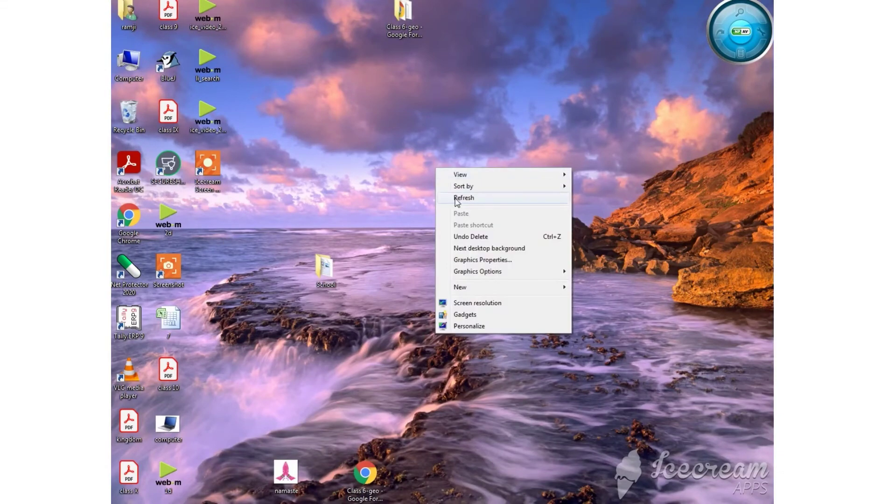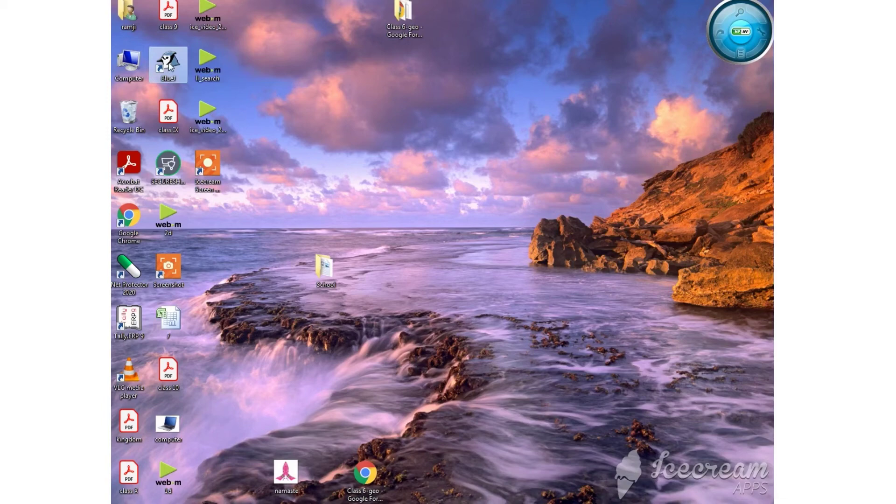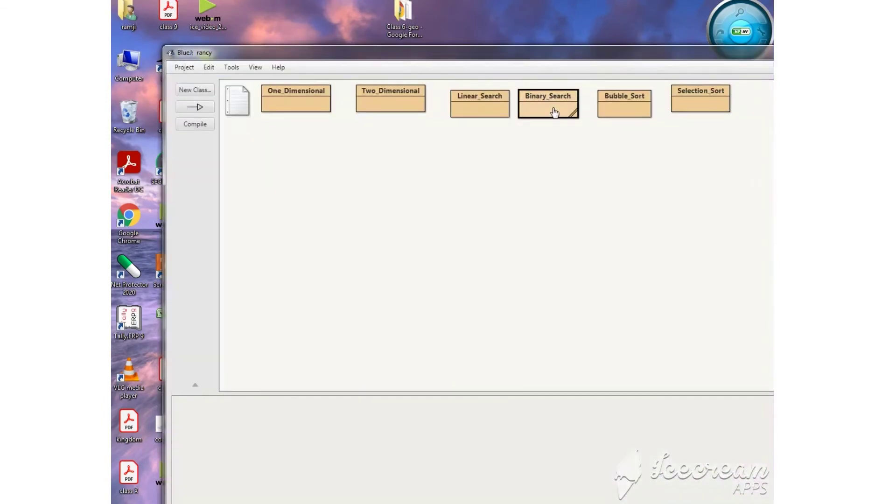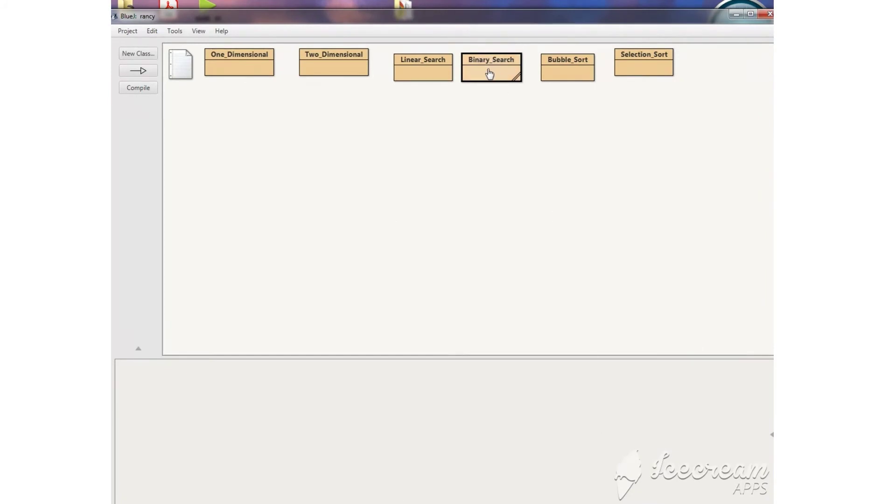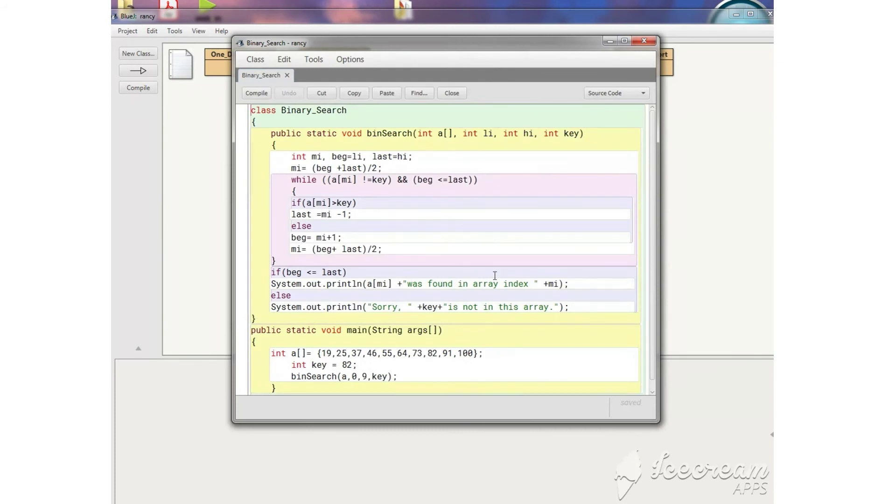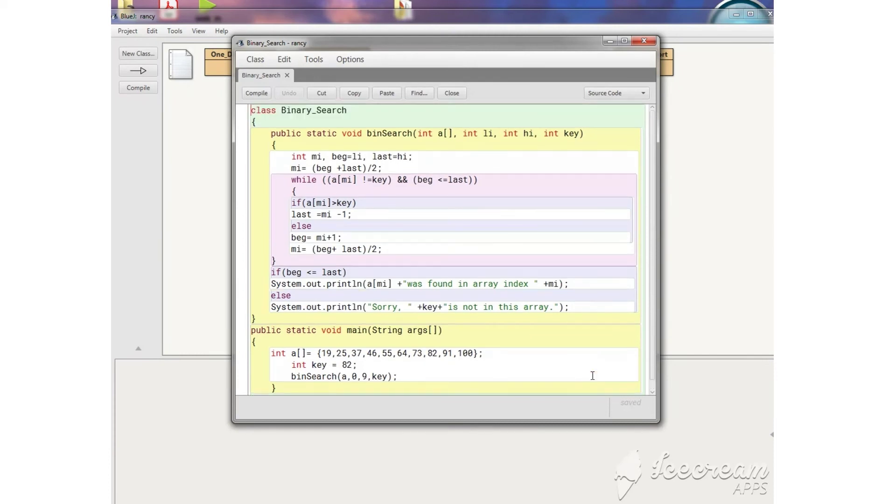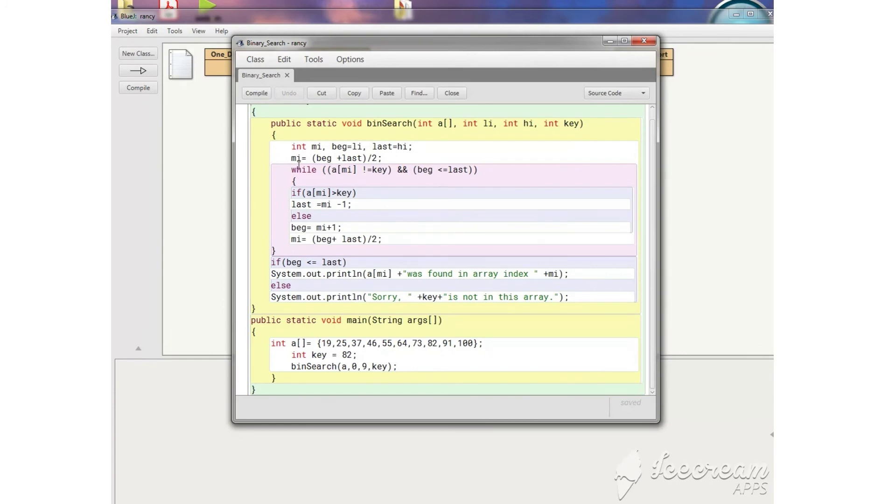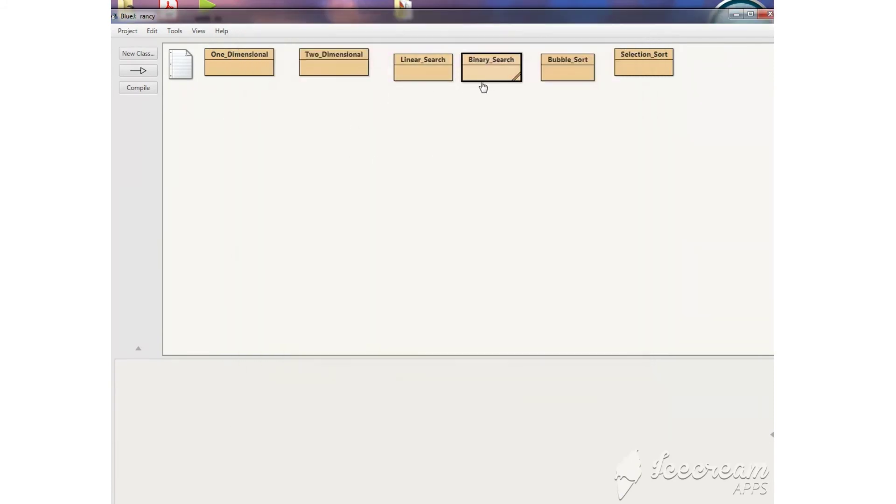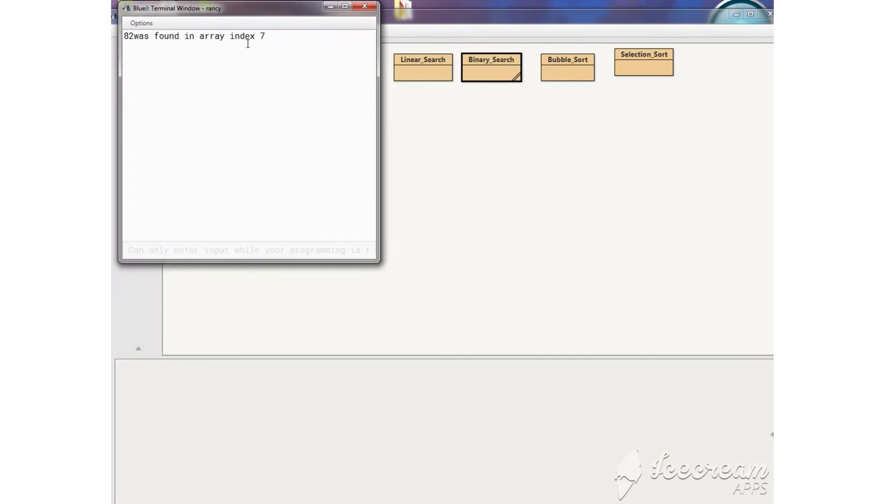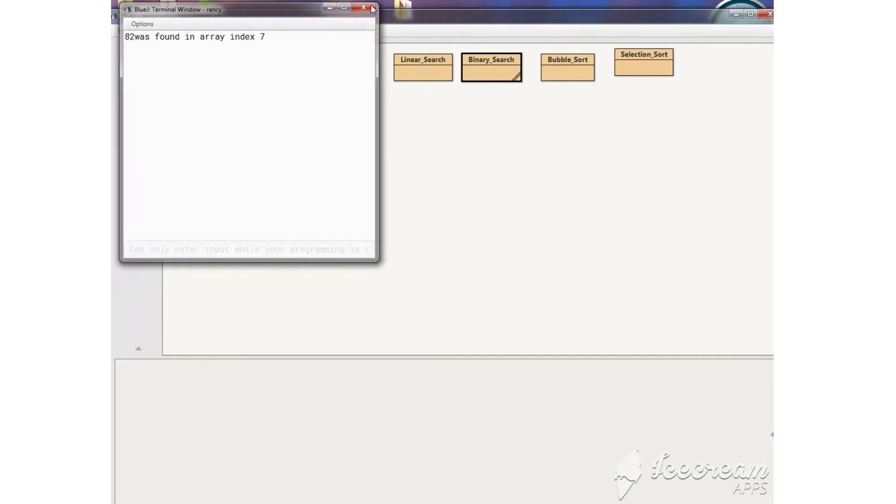Let's execute the program again regarding the binary search. Double click, BlueJ and then BlueJ screen is open. Here, I had created a program related to the binary search. I am not explaining the programming code again and again because it's simply the same programming which I had used while explaining you the topic. So, the same coding I had written here and you can compile this program and afterwards we will check the output. Let's compile it. No syntax error. And then we will execute the output. Let's execute it. There we go. Here we get the output. 82 was found in an index position.